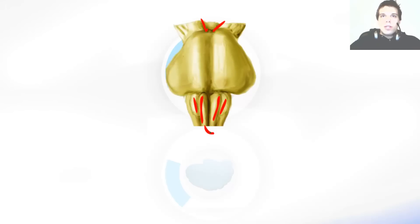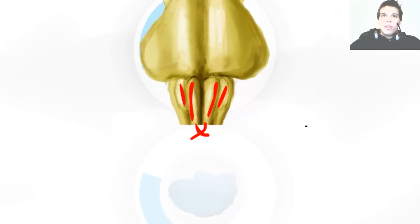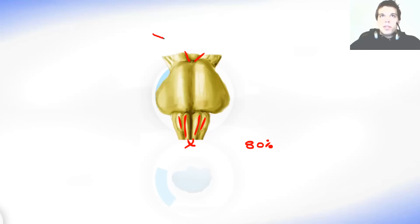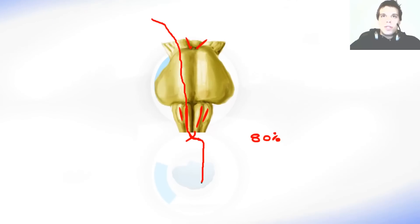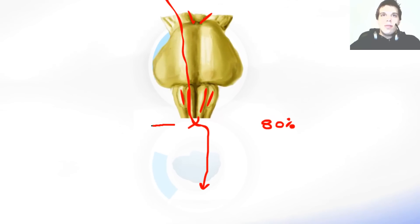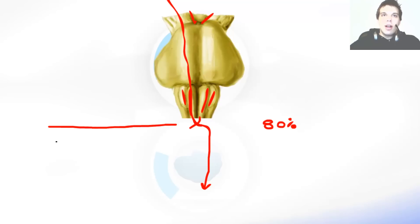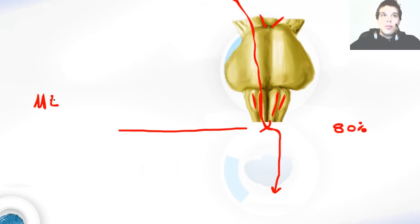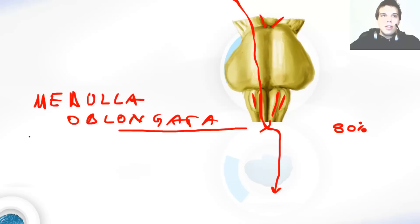The decussation of pyramids is the place where almost 80% of motor fibers in the pyramids cross. So we have the fibers coming from the brain, going to the pyramids, and at the decussation of pyramids they cross. When they cross the midline, they continue down as the lateral corticospinal fasciculus. This is a very important place because it is where the spinal cord begins and the medulla oblongata ends. Up there we had the medulla oblongata, and below is the spinal cord.